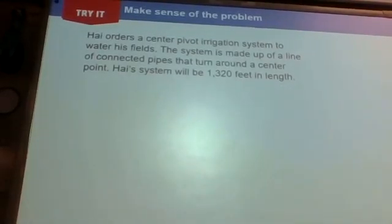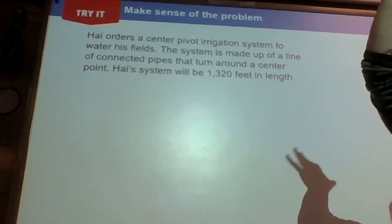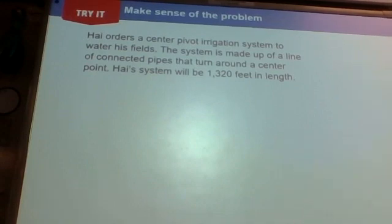Okay, so here is the problem. Hal orders a center pivot irrigation system. How many of you guys have ever been over to Eastern Washington? Okay, when you guys get past Ellensburg and you go down through Vantage, you see the horses on the hill. Anyway, you get over to Eastern Washington and there are fields and fields and fields of farms everywhere over there.